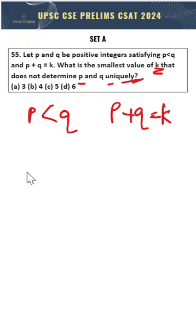When they say p and q uniquely, they mean that the number of pairs that can be formed. And if the number of pairs formed is just 1 for the lowest value of k, then we should not consider that statement. So this is the meaning of the question.